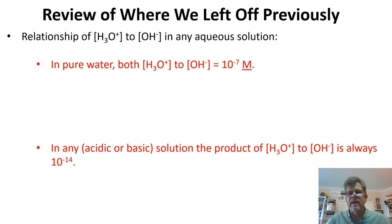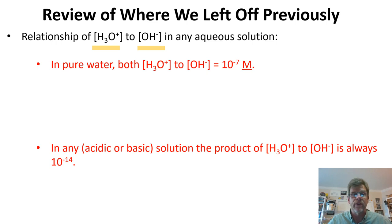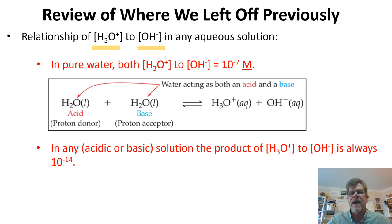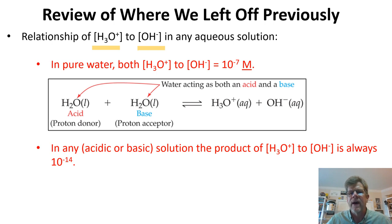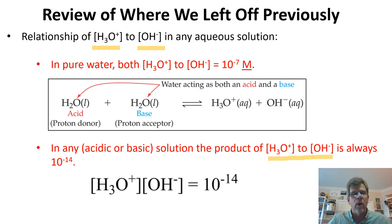Let's take a look at where we left off previously with the concept of acids and bases, specifically with aqueous solutions of an acid or a base. The business end of any acid is hydronium ion, and the business end of any base in solution is hydroxide ion. In pure water, both the hydronium and hydroxide ion are naturally 10 to the minus seventh molar, because water can act on itself to give vanishingly small concentrations — about one ten-millionth of a mole per liter — of hydronium and hydroxide spontaneously. In any solution, be it acidic or basic, the product of both the hydronium and hydroxide ion concentrations is always 10 to the minus fourteenth.